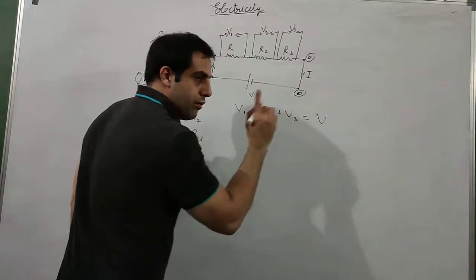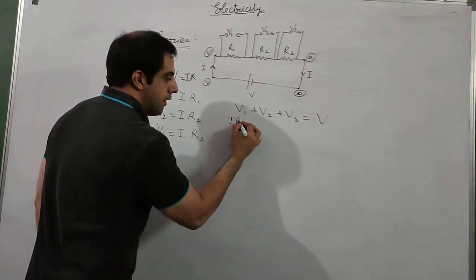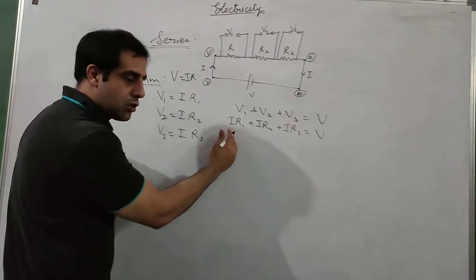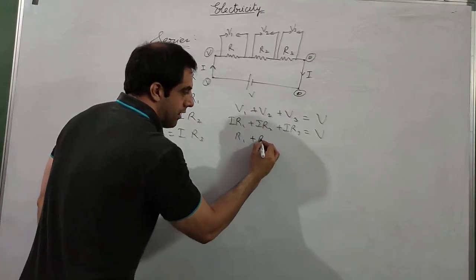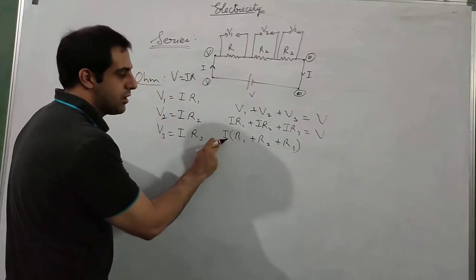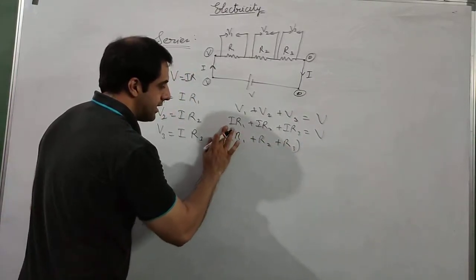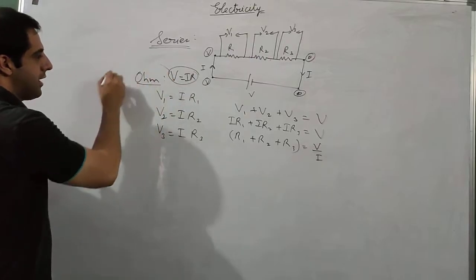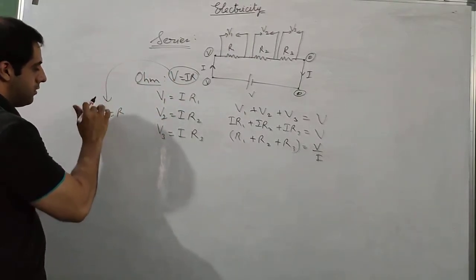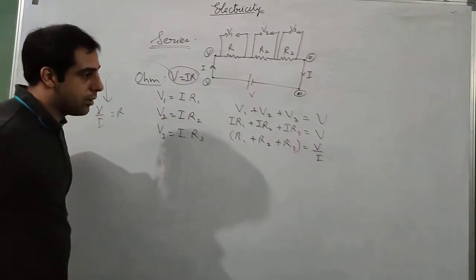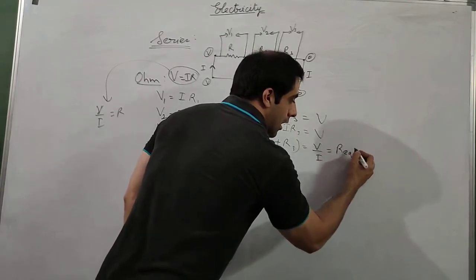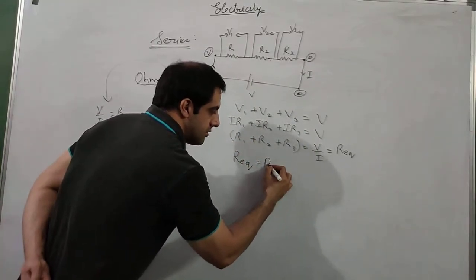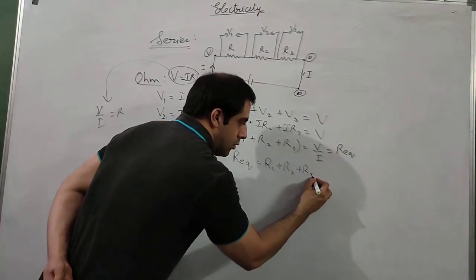Since V1 plus V2 plus V3 equals V, substituting gives IR1 plus IR2 plus IR3 equals V. Taking I as common: I times (R1 plus R2 plus R3) equals V. Rearranging: V divided by I equals R1 plus R2 plus R3. From Ohm's law, V divided by I equals R equivalent — the one resistor that can replace all three. So the equivalent resistance equals R1 plus R2 plus R3.